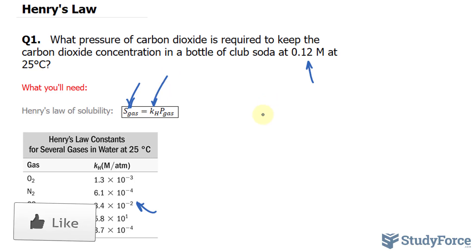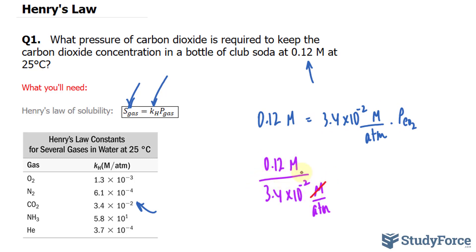Here's what I mean. I'll take 0.12 molar is equal to 3.4 times 10 to the power of negative 2 molars per atmosphere multiplied to the pressure of CO2. We'll divide both sides by this number. Watch what happens. The molar unit will cancel out, leaving us with atmospheres at the top.